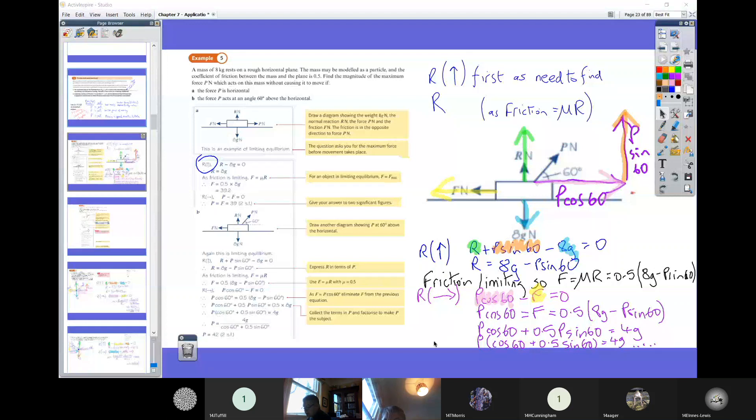Then when we go and resolve horizontally, we can substitute in, rearrange, and factorize to isolate P. Once we've got right at the bottom there, we're just going to divide through by what's in the bracket. I ran out of space, so apologies for this. Example six is just a similar one done on the angle.